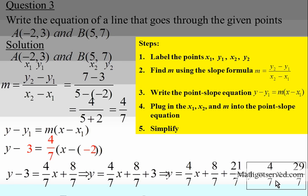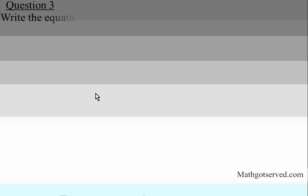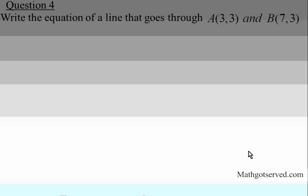So the slope-intercept form is y equals four over seven x plus 29 over seven, and the point-slope form is y minus three equals four over seven times x minus negative two. Those are the two forms of the equation of the line through those given points. Now let's look at example four — question four. We are to write the equation of a line that goes through three, three and seven, three.